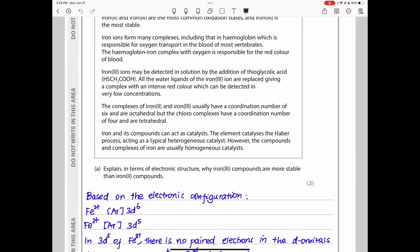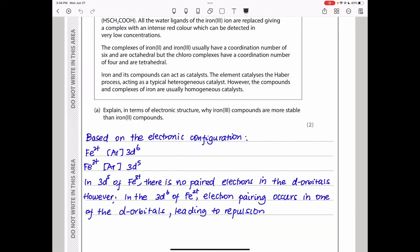After reading this, let's go to the first question. They say: explain, in terms of electronic configuration or electronic structure, why iron 3+ compounds are more stable than iron 2+ compounds. We need to begin by writing the electronic configuration. So, here I wrote the configuration of Fe2+: it is argon 3d6. That of Fe3+ is going to be argon 3d5. I skipped the 4s because the 4s electrons are lost here.